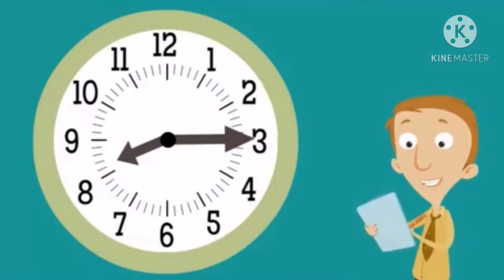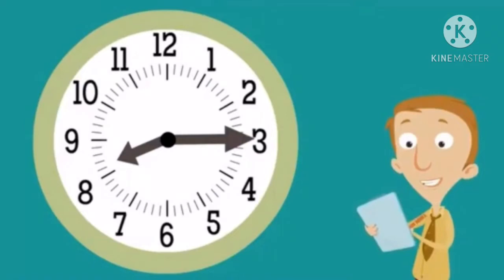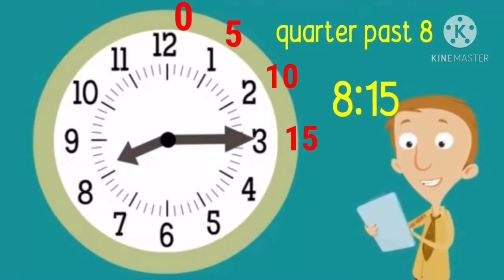Now, where is the minute hand pointing? That's right, at the number three. We are going to count by fives. We start at the twelve, which is zero, five, ten, fifteen. So how many minutes is this showing? It's fifteen minutes. What time is the clock showing, children? Quarter past eight. It is also the same as eight fifteen.